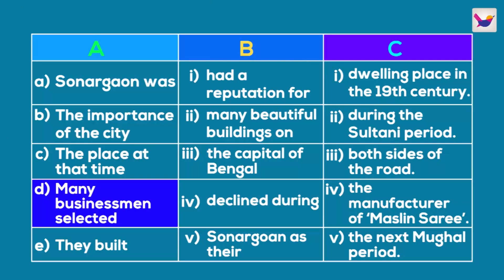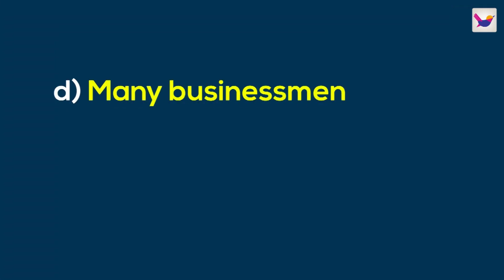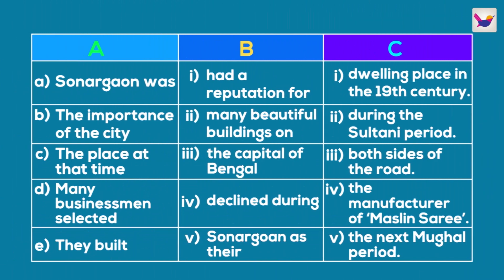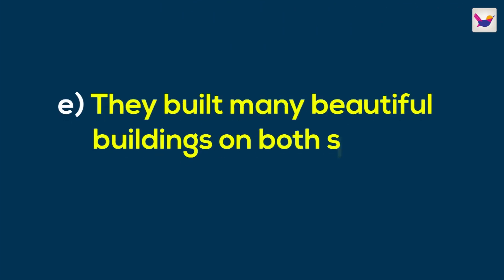Many businessmen selected — here we identify the subject of a verb. We match from column B: 'Sonargaon as their,' and from column C: 'dwelling place in the 19th century.' So the sentence is: Many businessmen selected Sonargaon as their dwelling place in the 19th century. The remaining phrases give: They built many beautiful buildings on both sides of the road.